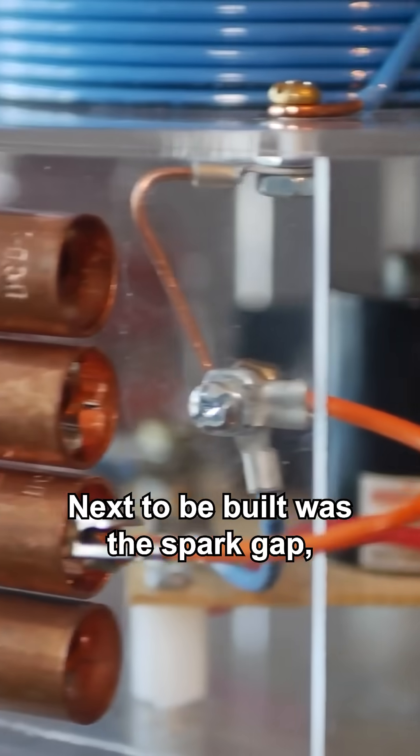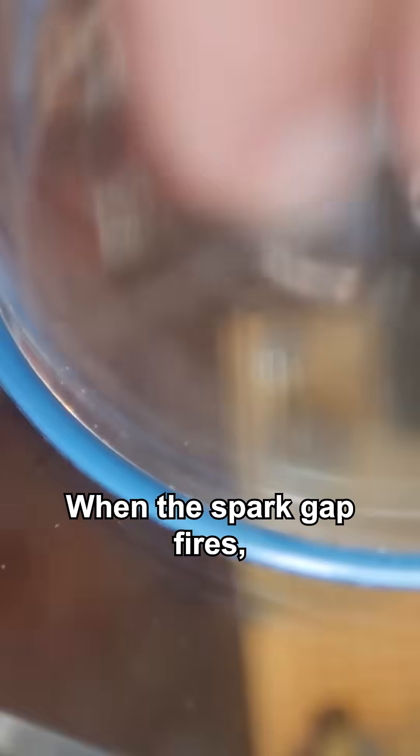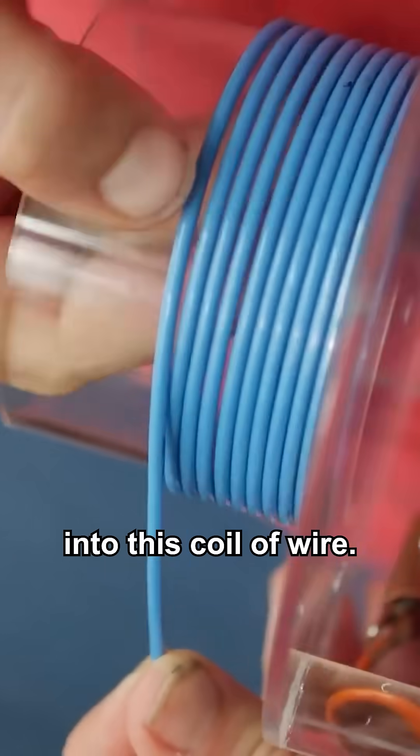Next to be built was the spark gap. Then to finish off the primary circuit was the primary coil. When the spark gap fires, it dumps energy into this coil of wire.